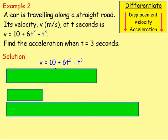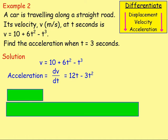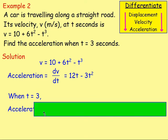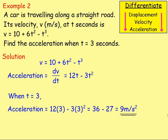Example 2: a car is travelling along a straight road. Its velocity v metres per second at t seconds is v = 10 + 6t² − t³. Find the acceleration when t equals 3 seconds. To get the acceleration you differentiate the velocity: dv/dt = 12t − 3t². We want the acceleration when t = 3, so a = 12(3) − 3(3²) = 36 − 27 = 9 metres per second per second.